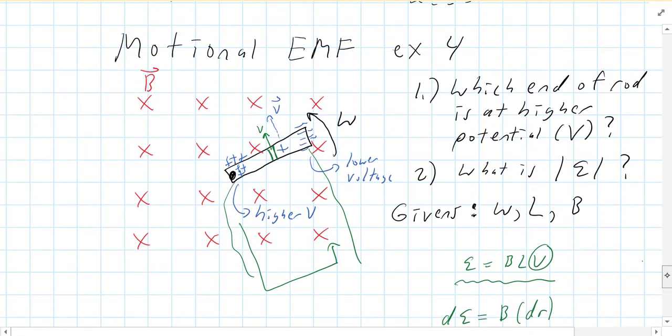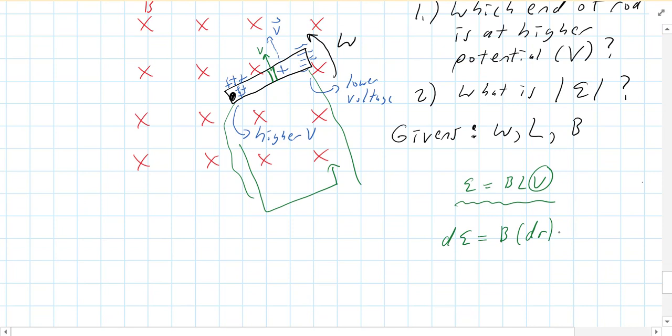and then the velocity. Well, how do you write velocity in terms of omega? Well, omega, or velocity, is omega R. That's a review from first semester.